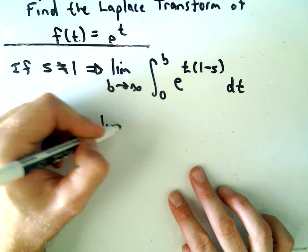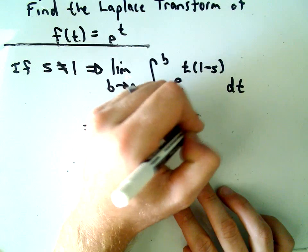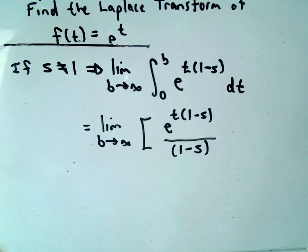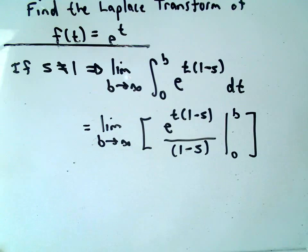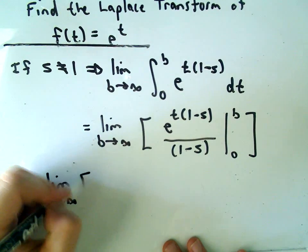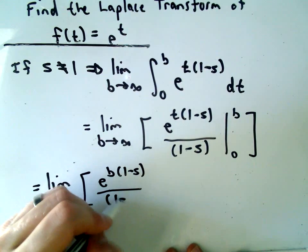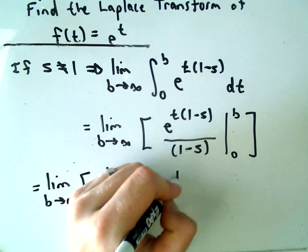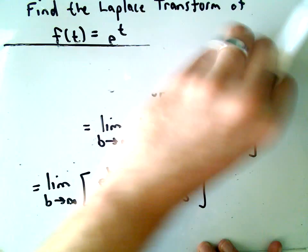When we integrate, we get the limit as b goes to infinity of e to the t times (1 minus s), divided by (1 minus s). Now we plug in our limits of integration: we get e to the b times (1 minus s) over (1 minus s), minus e to the 0 — which is 1 — over (1 minus s). We're getting closer, almost there.